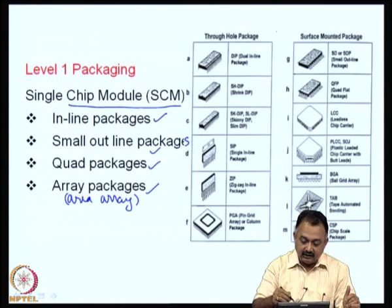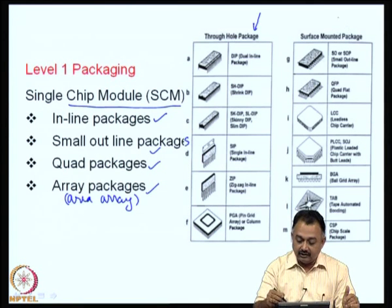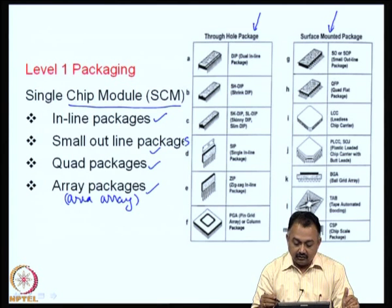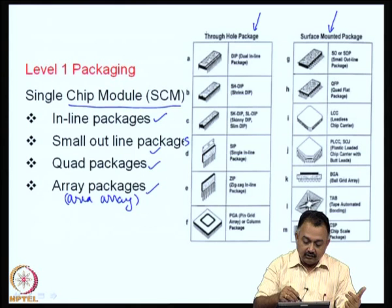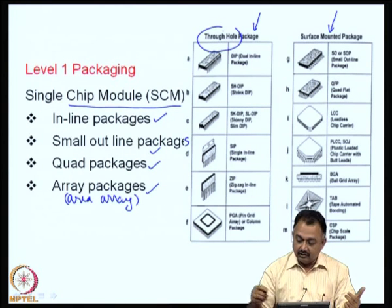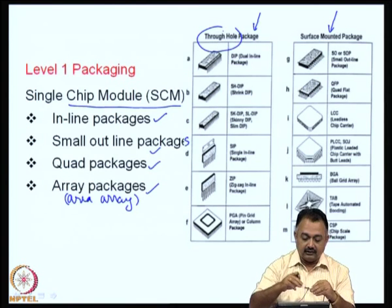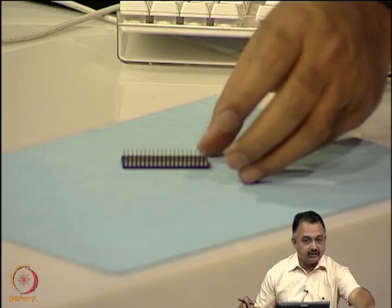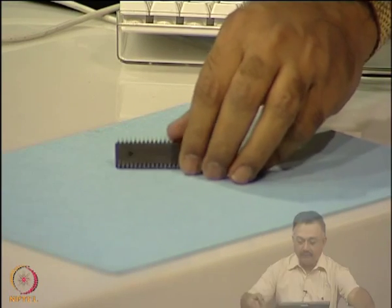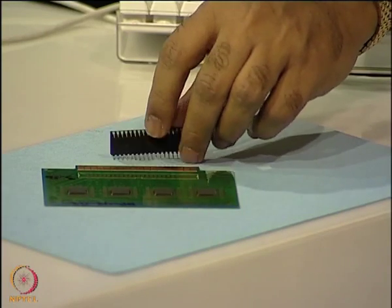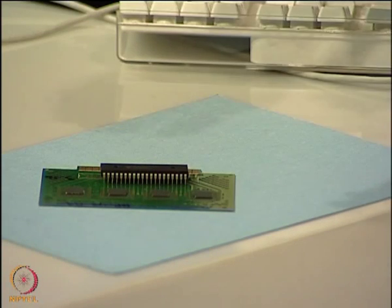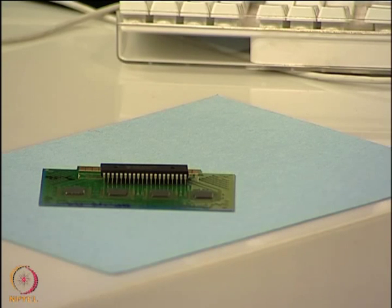There are two basic classifications: through-hole packages and surface mount packages. A through-hole package, as the name indicates, consists of pins. The pins must be inserted into a printed wiring board, which means holes need to be fabricated in the board and the pins go inside through those holes. Those packages are known as through-hole packages.